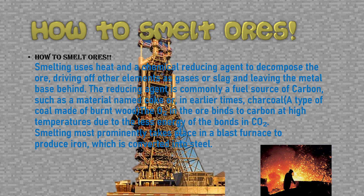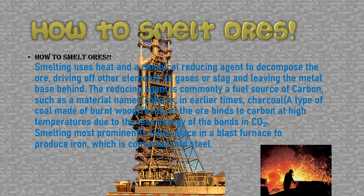Smelting prominently takes place in a blast furnace to produce iron, which is converted into steel. We can also use a type of smelting machine to turn the iron into pig steel, which is a very efficient and cheap way of making steel quickly. We can also smelt gold ore and iron ore, with the ore coming out with the same results. This is the example of ore smelting, and this is the station or machine where you smelt the ore.